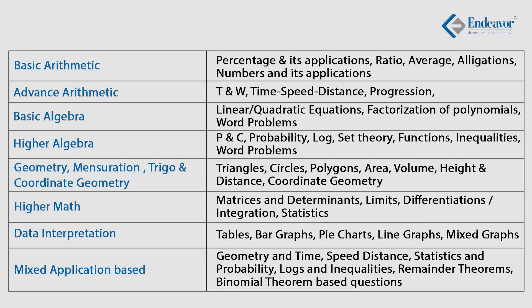The geometry section alone can have around 8 to 10 questions — last year there were around 4 to 5 questions on just coordinate geometry. The sixth unit is higher maths, covering chapters like limits, matrices, determinants, differentiation, integration, and applications of higher maths. There were also reported instances of questions on Boolean algebra, but since there is no fixed syllabus, we go by standard questions and feedback received from most students.